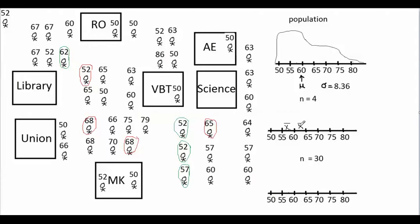What we're seeing here is the idea of sampling variability. Sampling variability is the idea that different samples give different results. When you do a study with a certain sample of people, you'll get a certain result. And if you go out and repeat the study with a different sample, you'll probably get a different result, because different samples are different groups of people.